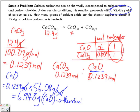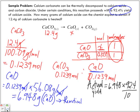92.4 percent is our yield. So our actual yield is equal to 6.948 times 92.4 percent. But remember, we always want to divide it by 100.